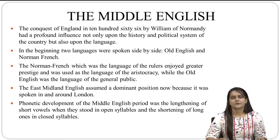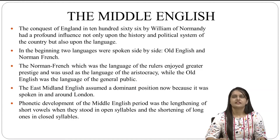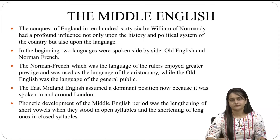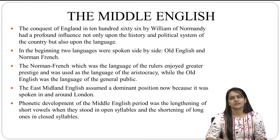Phonetic development of the Middle English period was the lengthening of short vowels when they stood in open syllables and the shortening of long ones in closed syllables. The discrepancy between spelling and pronunciation began in this period. The existence of two languages side by side gave rise to synonyms, one from the native tongue while the other was from the Norman French. The French also established the beginnings of the modern legal system and so a number of new words were introduced into English from French.